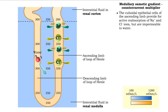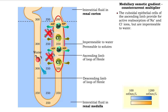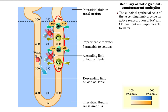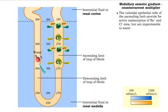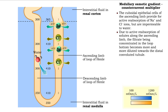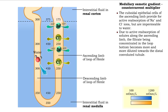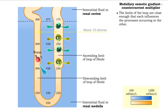The cuboidal epithelial cells of the ascending limb that provide active reabsorption of sodium and chloride ions are at the same time impermeable to water. Due to active reabsorption of solutes along the ascending limb, the filtrate being concentrated in the loop bottom becomes more and more diluted towards the distal convoluted tubule. The limbs of the loop are close enough that each influences the processes occurring in the other.